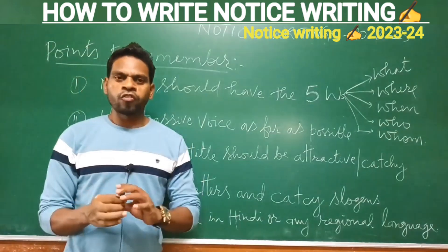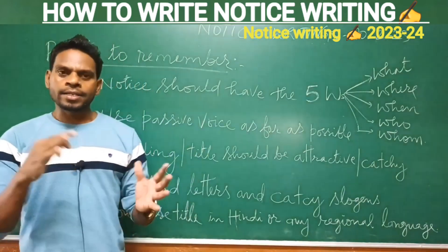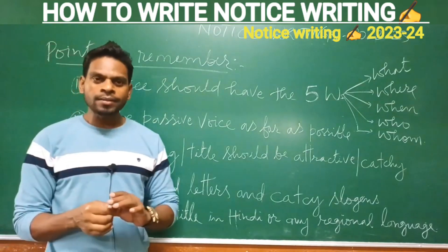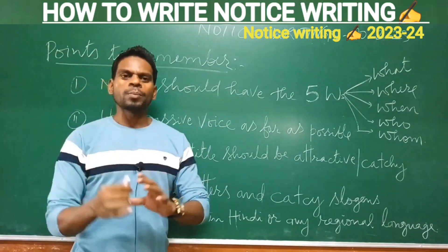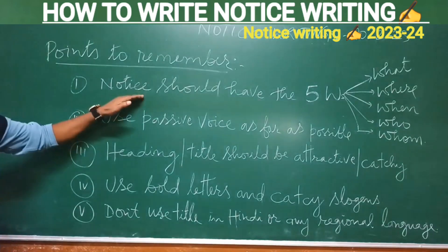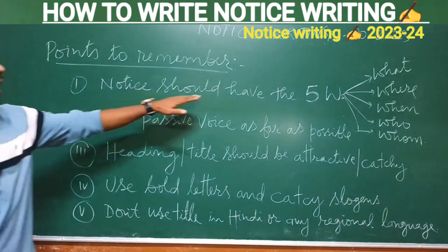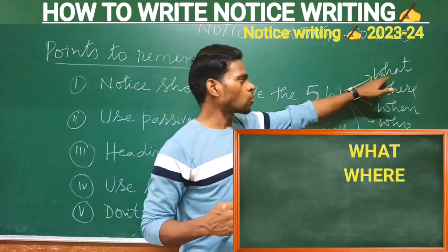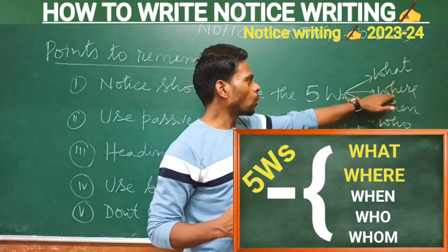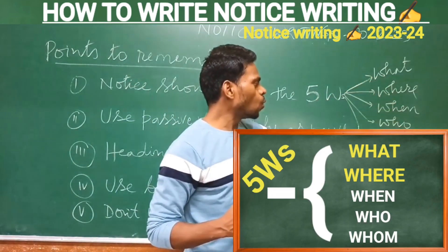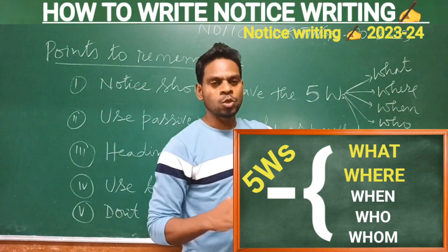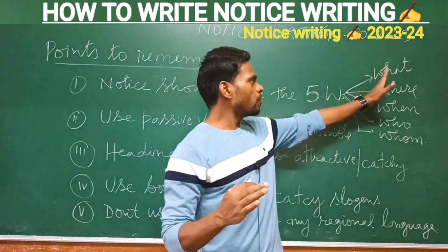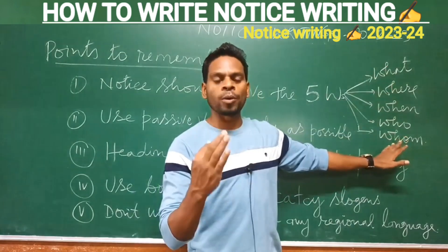Before we move to the ICSE recommended format of notice writing, some points to be remembered. First of all, a notice should have the five W's: what, where, when, who, and whom. Whenever you write notice writing, these five aspects should be given more importance.